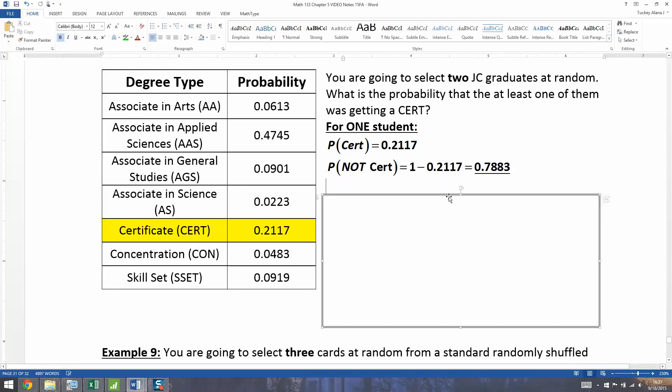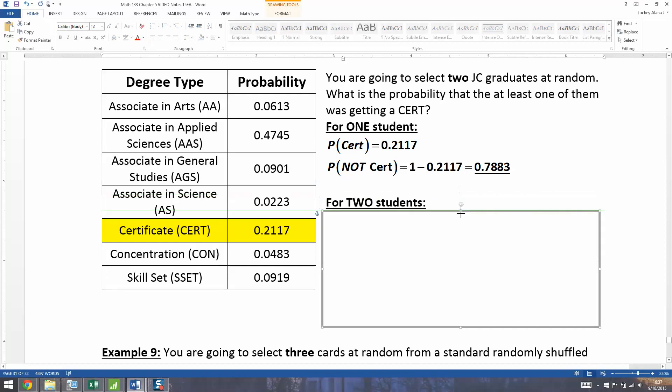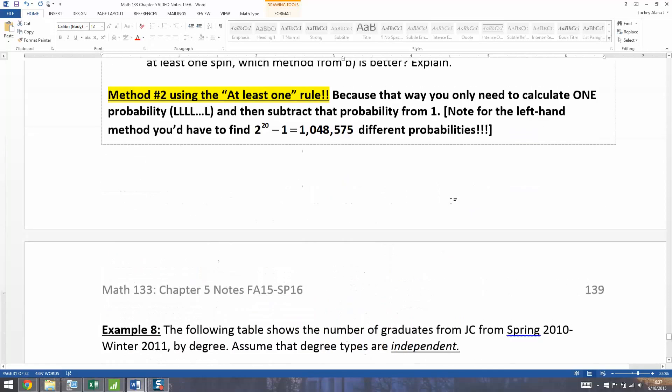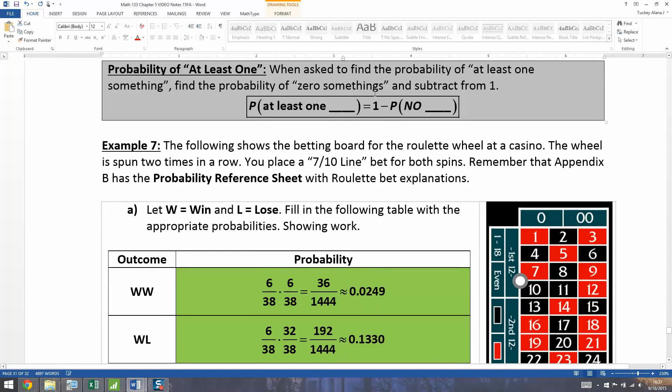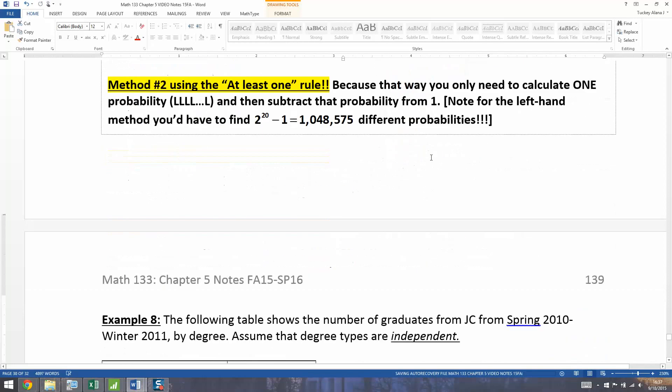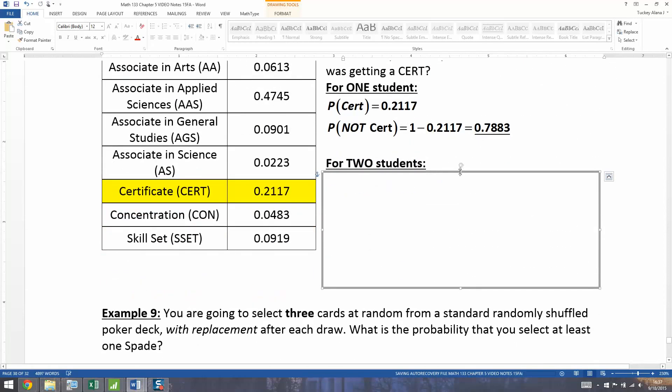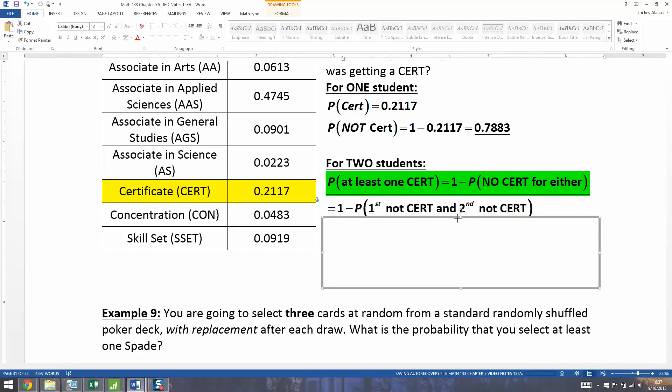Now let's talk about two students. For two students, we want the probability of at least one certificate. But according to that rule up here, that means that we want one minus the probability of no certificates. So that means you don't want a certificate for either one of these students. You don't want a certificate for the first student or nor for the second student. So that's one minus the probability of not certificate on the first student and not certificate on the second student. It doesn't say and anywhere, but of course it must be an and.